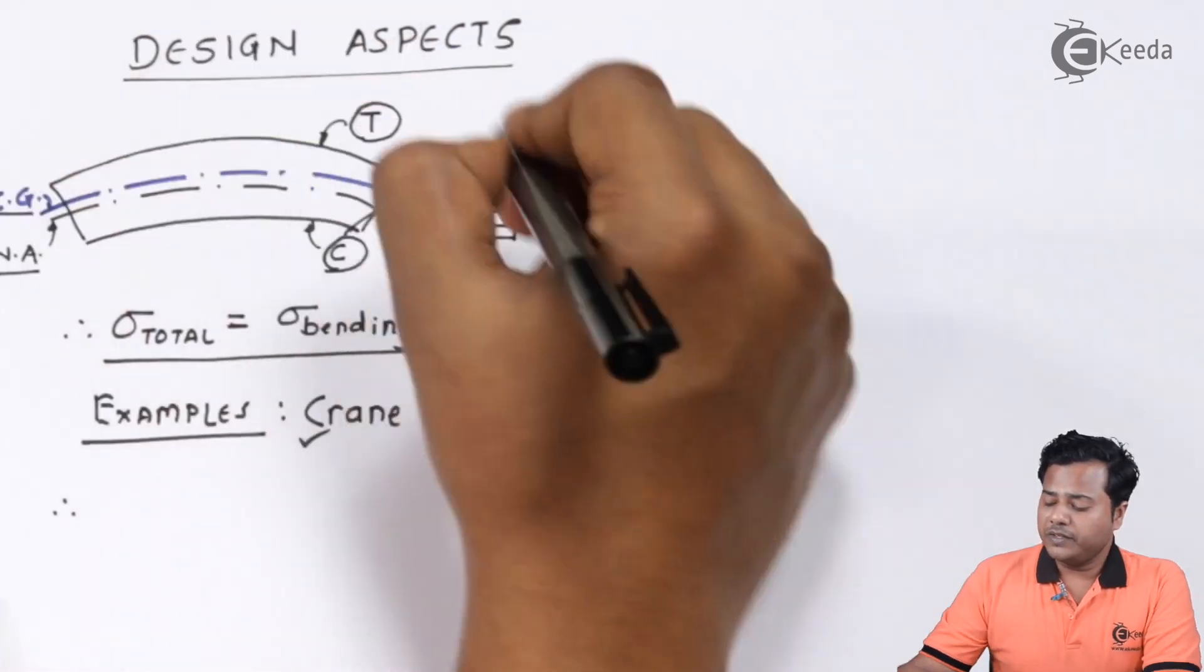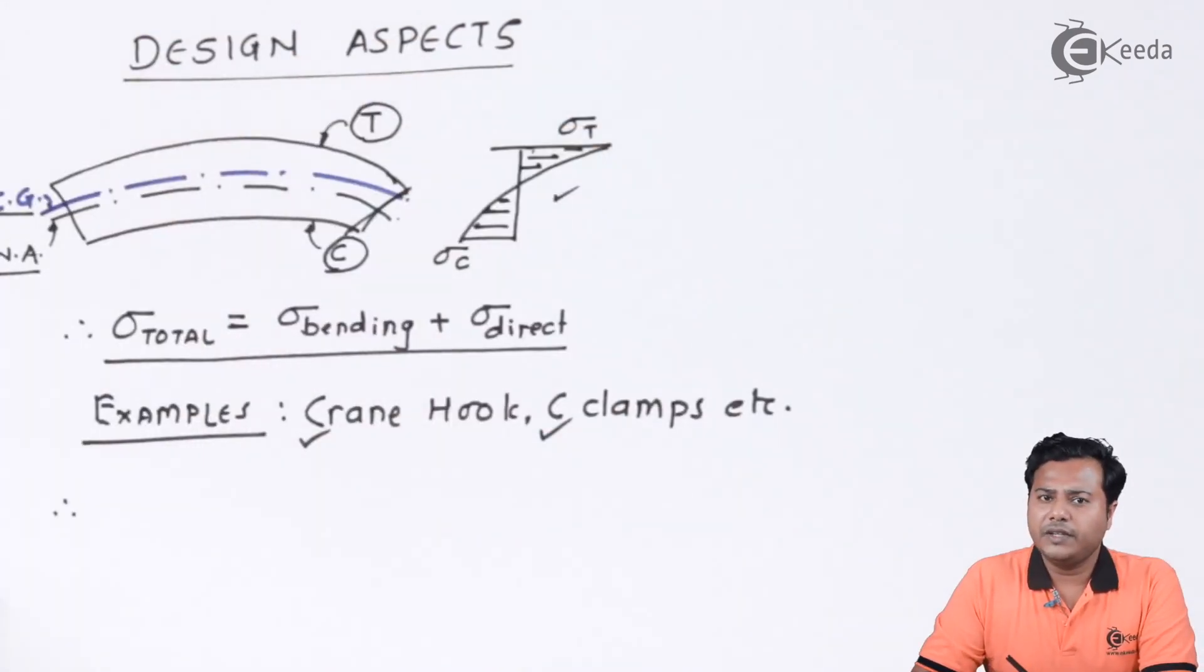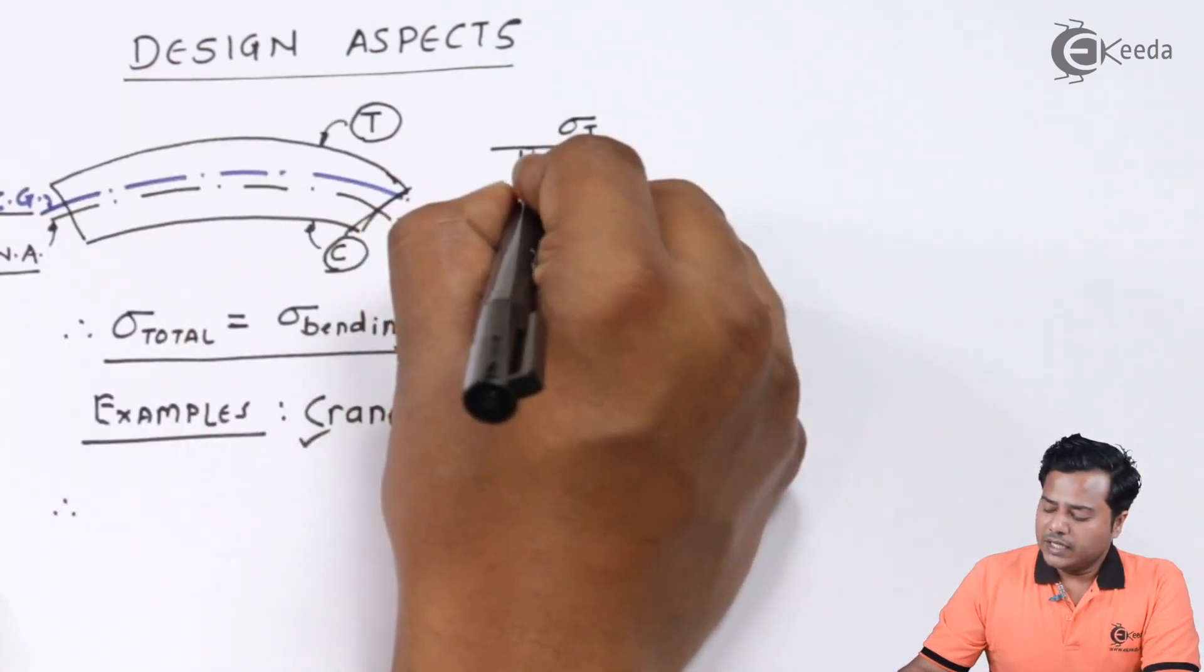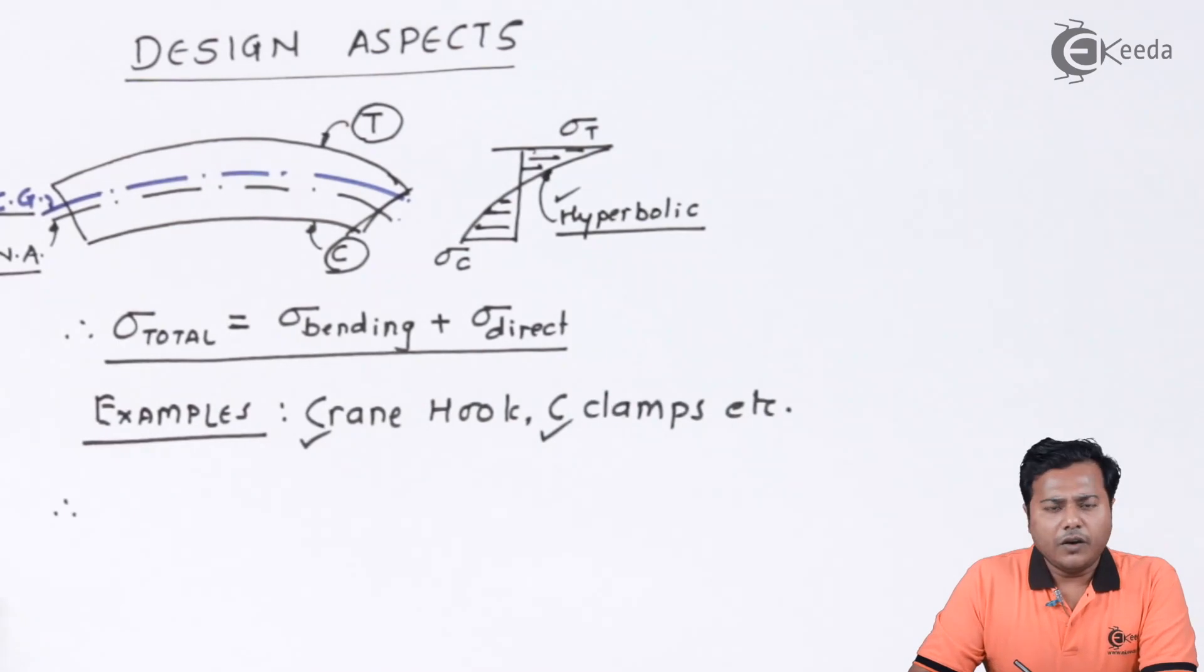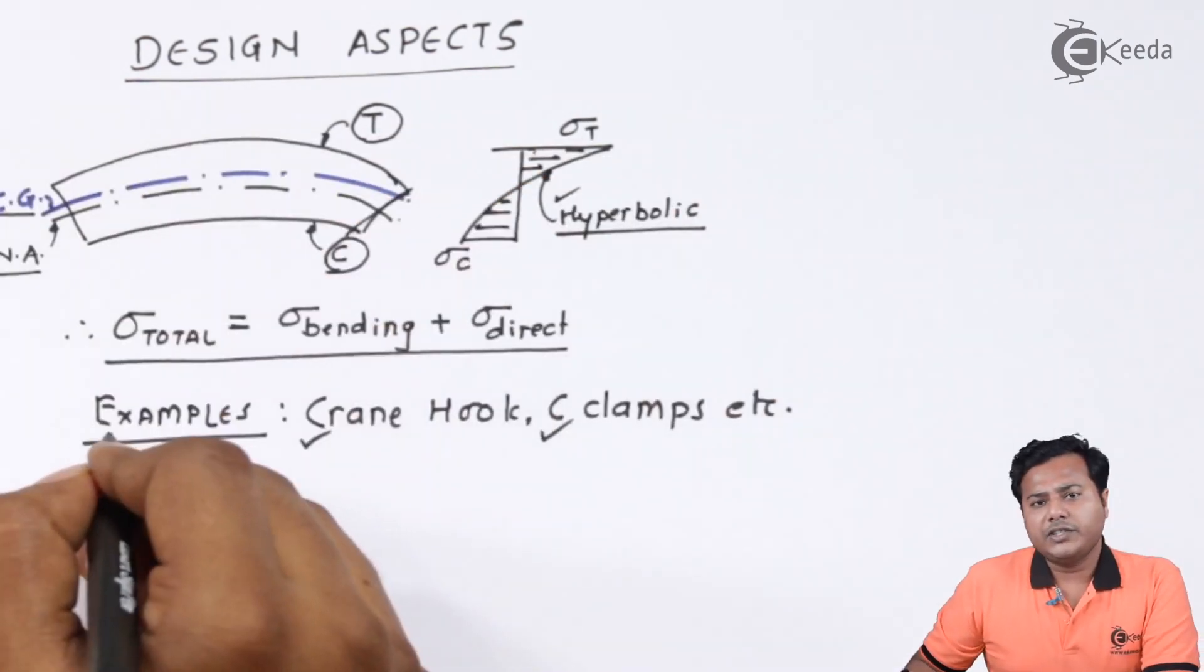Let us conclude this topic with the design aspects which we are discussing about. The very first design aspect we have learned is the variation. Yes, that is different. And one more thing is this is a hyperbolic variation. Of course, we can see this variation in the formula that is used for curved beams. But yes, it is a hyperbolic variation.